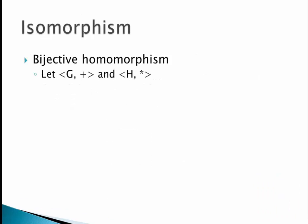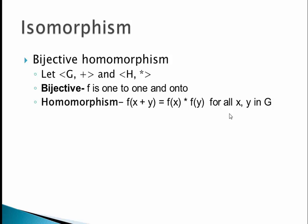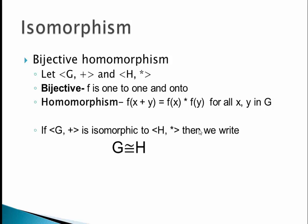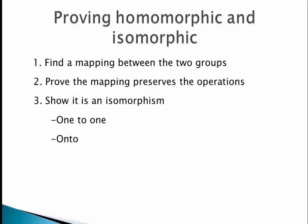An isomorphism is a bijective homomorphism. If G under addition and H under star are both groups, then we need the function to be one-to-one and onto, and also satisfy f(x + y) = f(x) ★ f(y) for all x and y in G. If G is isomorphic to H, we denote this with the isomorphism symbol. To show something is an isomorphism: first find a mapping, then prove the mapping preserves operations, and finally show the function is one-to-one and onto.